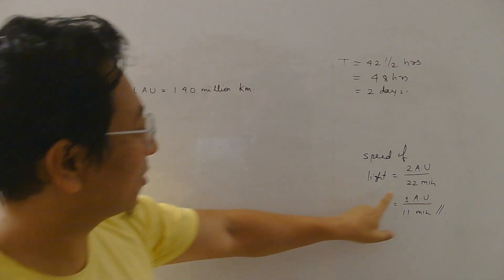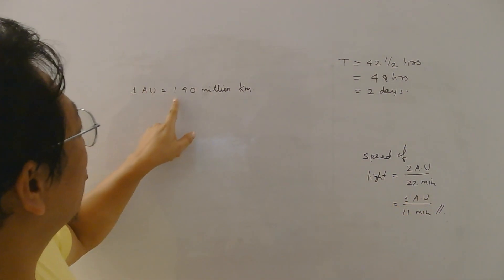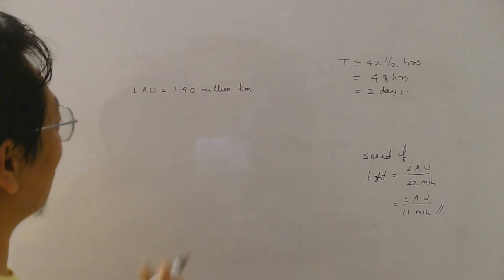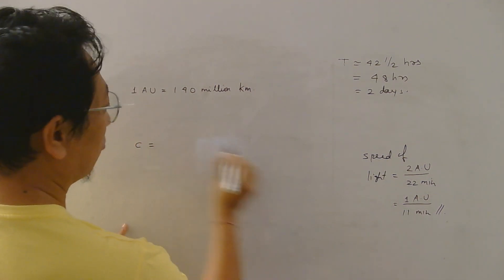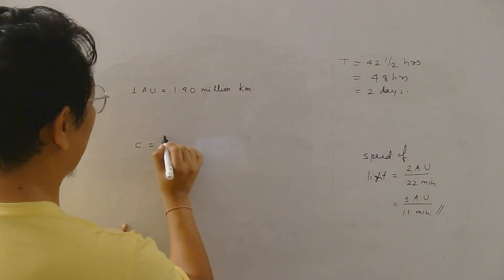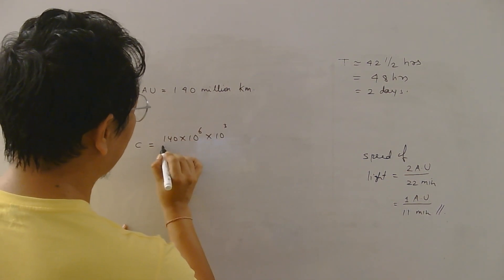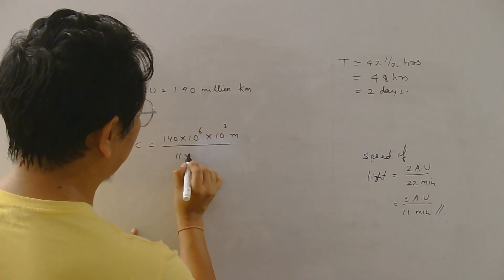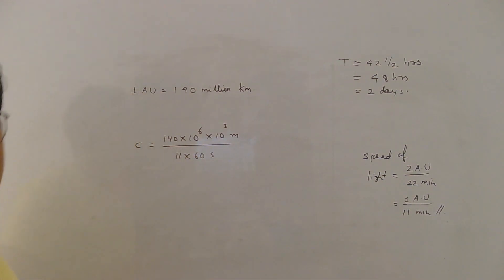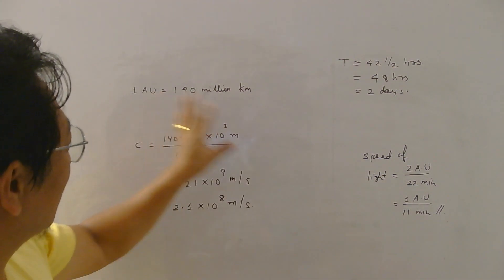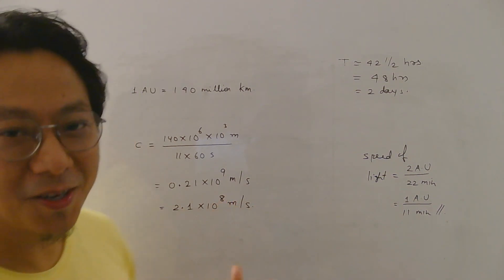Now at that time the best estimate of one astronomical unit, the distance between earth and sun, was found to be 140 million km. And using this value, the speed of light, which I can write c, will be equal to one astronomical unit is 140 million means 10 power 6 kilometer I can write 10 power 3 in meters, that is 11 into minute, if I convert into seconds will be 11 into 60 seconds. And if you do the calculations you will get 2.1 into 10 power 8 meters per second as the speed of light.